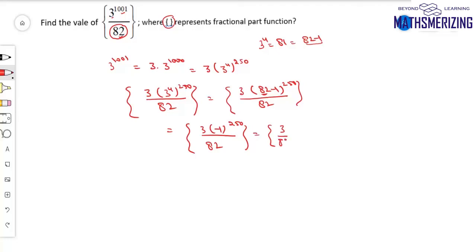This simplifies to 3 by 82, which is a number between 0 and 1. Between 0 and 1, the fractional part of x is simply x. So the answer is 3 by 82.